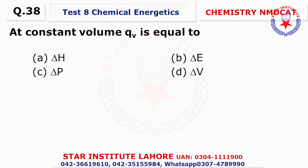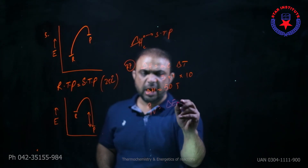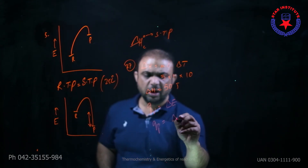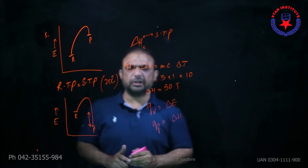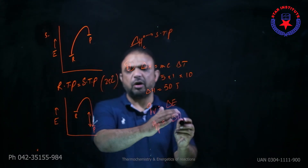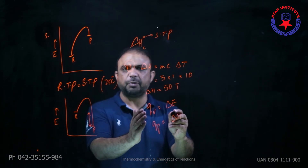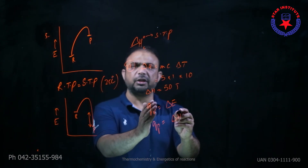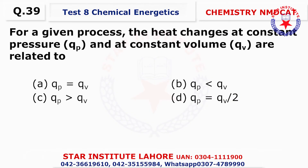Question number thirty-eight: At constant volume, qV = delta E; and qP = delta H. Heat supplied at constant pressure equals enthalpy change, and heat supplied at constant volume equals internal energy change (delta E), not Gibbs free energy.